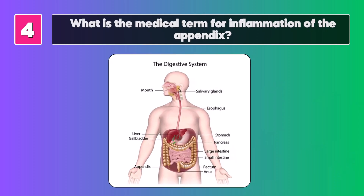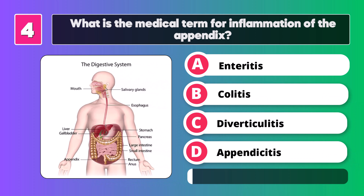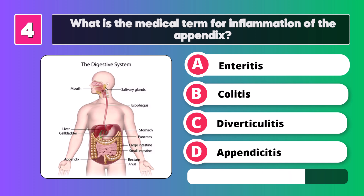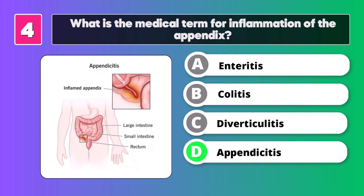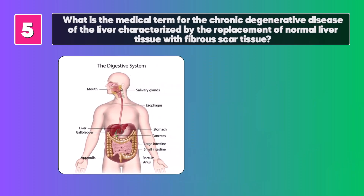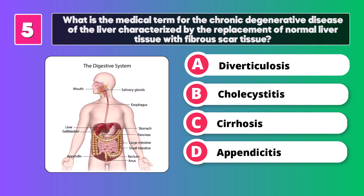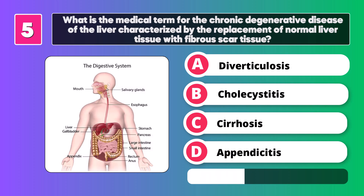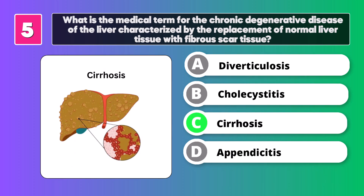What is the medical term for inflammation of the appendix? What is the medical term for the chronic degenerative disease of the liver, characterized by the replacement of normal liver tissue with fibrous scar tissue? Cirrhosis.